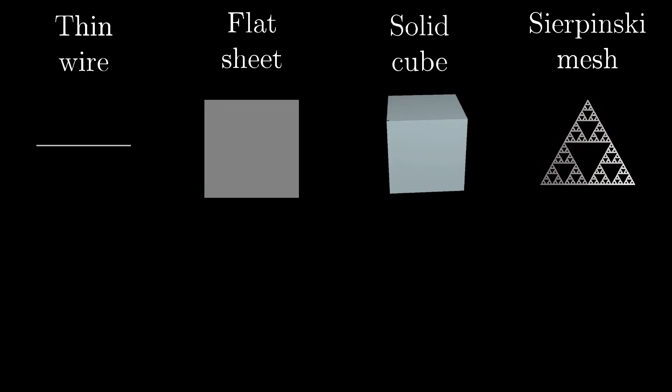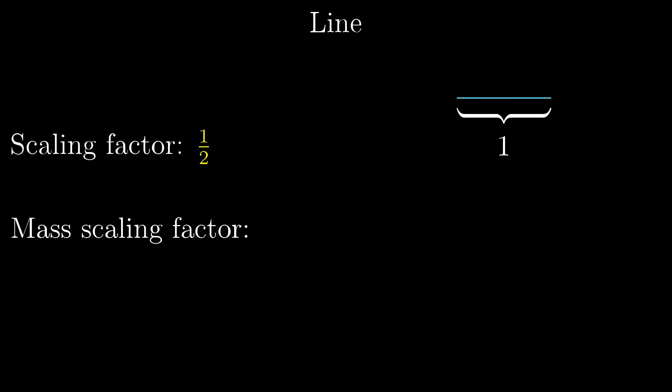Fractal dimension has everything to do with understanding how the mass of these shapes changes as you scale them. The benefit of starting the discussion with self-similar shapes is that it gives us a nice clear-cut way to compare masses. When you scale down that line by one-half, the mass is also scaled down by one-half, which you can viscerally see because it takes two copies of that smaller one to form the whole.